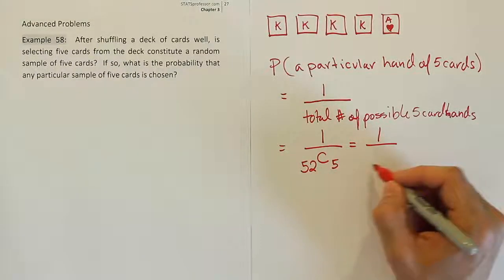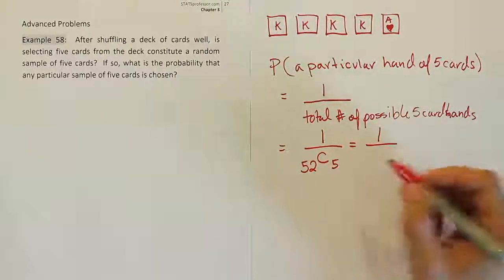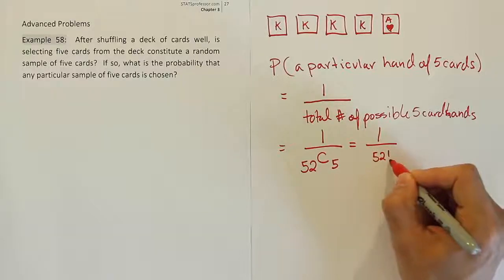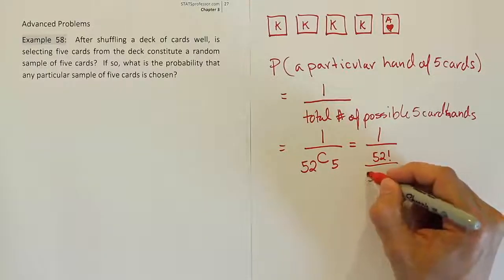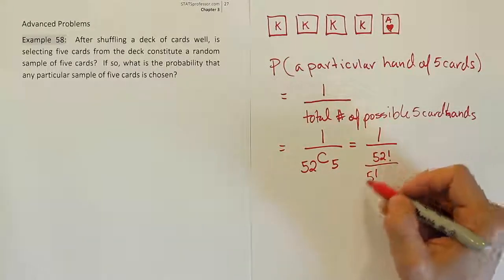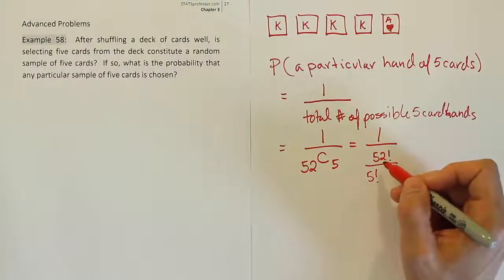So if we work that out using a calculator, it would give us the answer right away. If we do it by hand, it's going to be 52 factorial over 5 factorial. This guy on top factorial, that guy on the bottom factorial, and then the difference between these two factorial. So that would be 47 factorial.